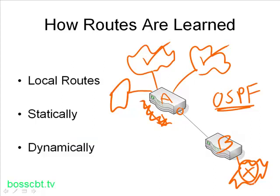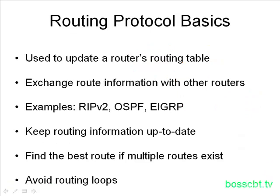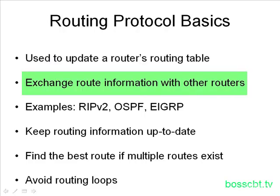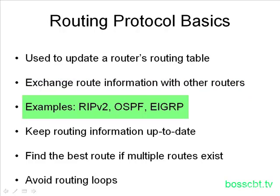Those are the three methods generally used to populate a router's route table. Since we ended on dynamic routing protocols, let's drill down into that a little bit more. Routing protocols basically enable routers to update their routing tables — more specifically, they enable routers to exchange route information, and then they update their routing table with that information. A few example routing protocols include RIP, OSPF, and EIGRP. There are others as well, but these are very common.